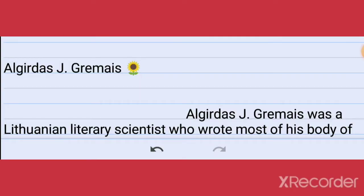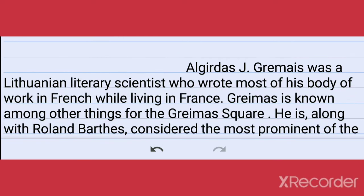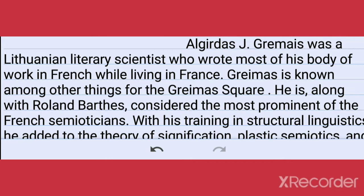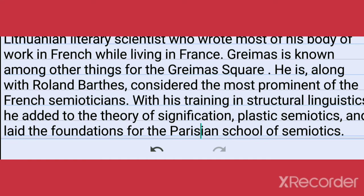Today I am going to talk about Algirdas J. Greimas. Greimas was a Lithuanian literary scientist who wrote most of his body of work in France while living in France. Greimas is known among other things for the Greimas square. He is, along with Roland Barthes, considered the most prominent of the French semioticians. With his training in structural linguistics, he added to the theory of signification, plastic semiotics, and laid the foundation for the Parisian school of semiotics.